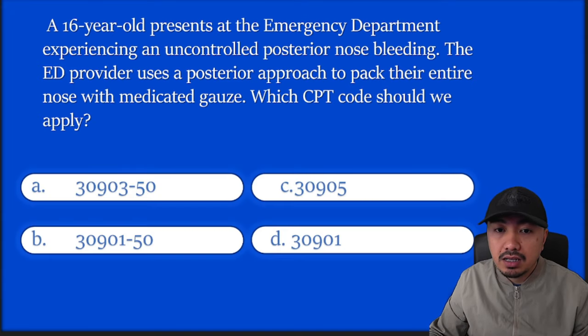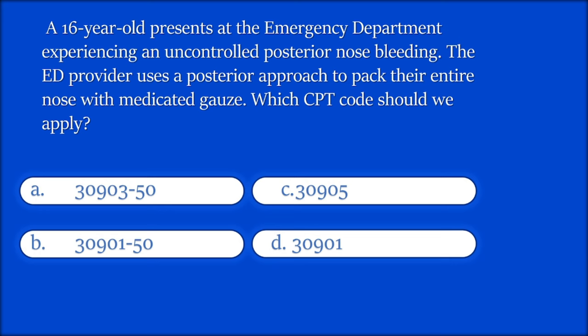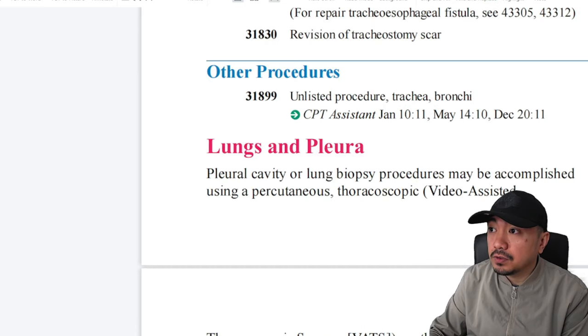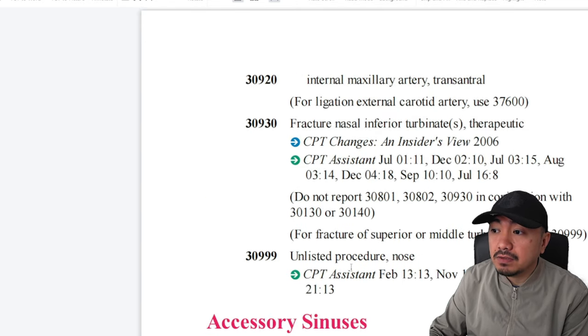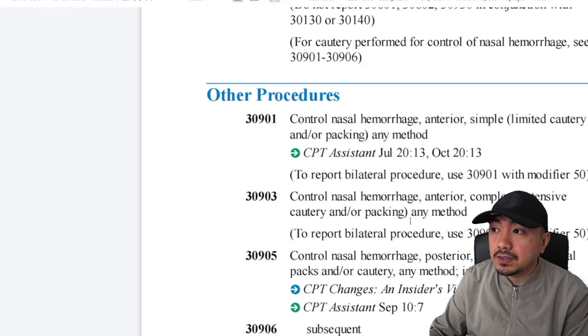Timer starts now. A 16-year-old presents at the emergency department experiencing an uncontrolled posterior nose bleeding. The emergency provider used a posterior approach to pack their entire nose with medicated gauze. Which CPT code should be applied? Time's up — just go to your nose procedures at the beginning portion of your 3000 series, towards the control of epistaxis or control of nasal hemorrhage.